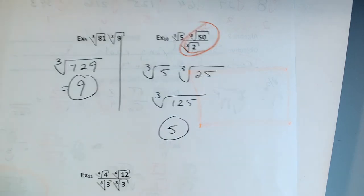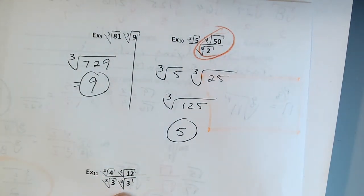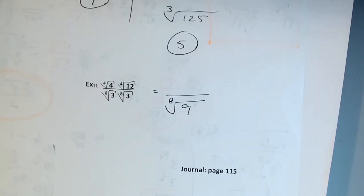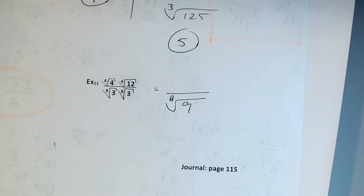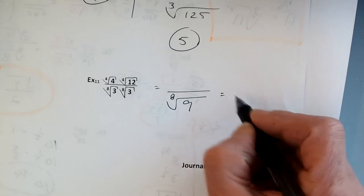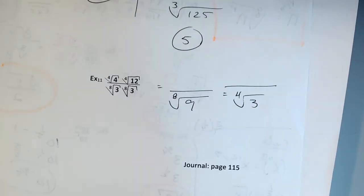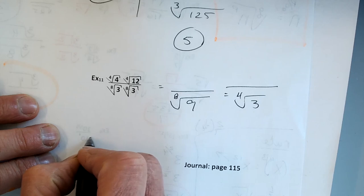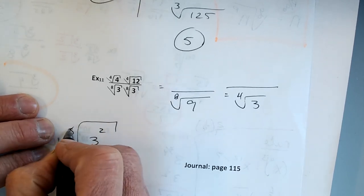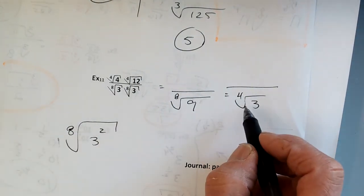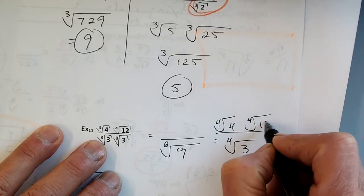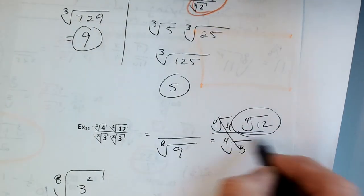Let's see about this last one. We have 4th roots and 8th roots. The 8th root of 9 can be rewritten — since 9 is the same thing as 3 squared — and if I reduce that 2 over 8 to 1 fourth, I get the 4th root of 3. Then these two: I get the 4th root of 4 times the 4th root of 12. These two will cancel, and there's my answer: 4th root of 12.